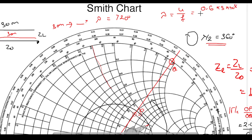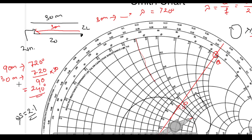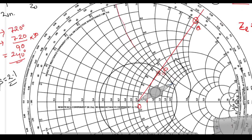Since 90 meters corresponds to 720 degrees, 30 meters corresponds to 720 divided by 90 times 30, which equals 240 degrees. So if I rotate 240 degrees on the Smith Chart I can locate the Zin point. Always remember: moving from the load point to the input point means rotating in the clockwise direction.